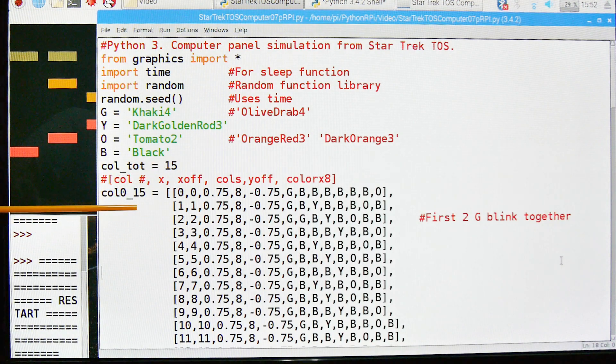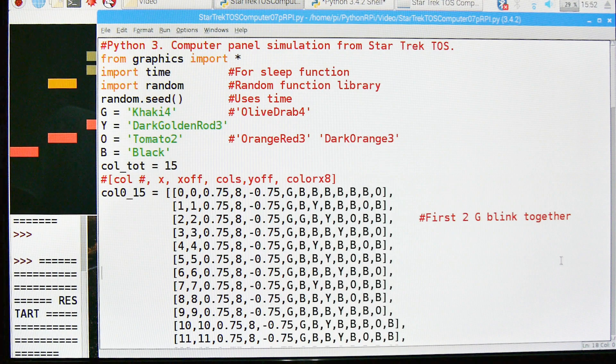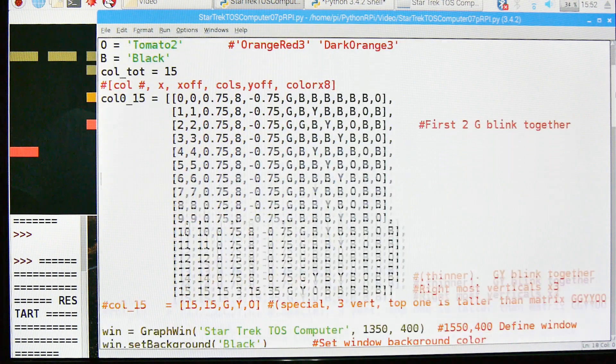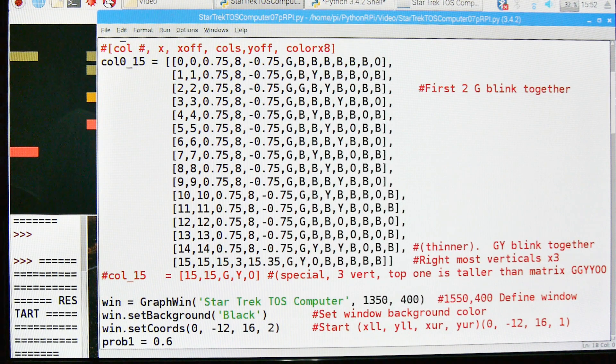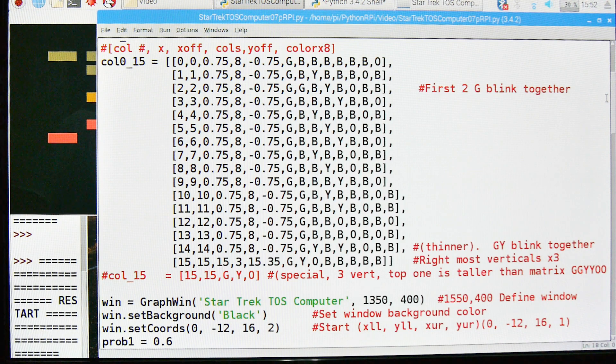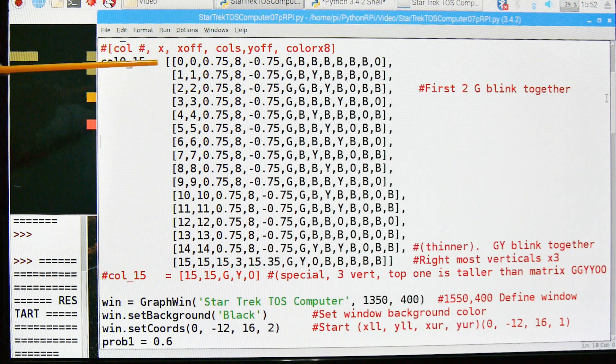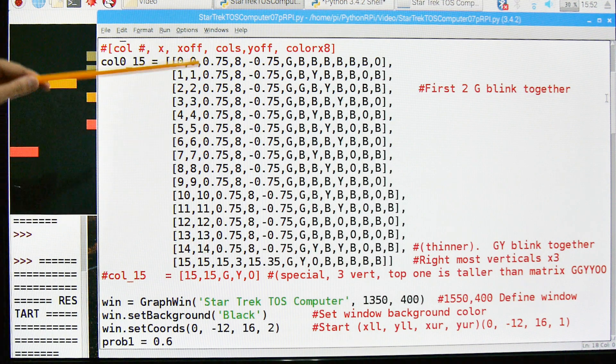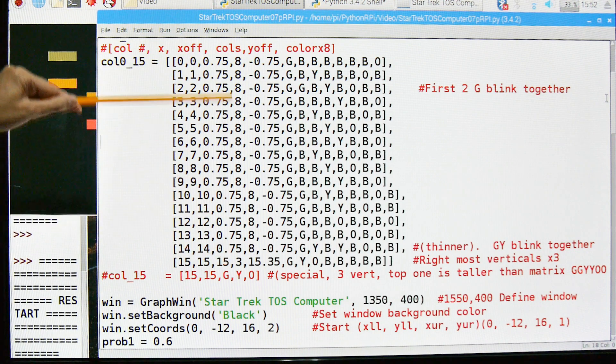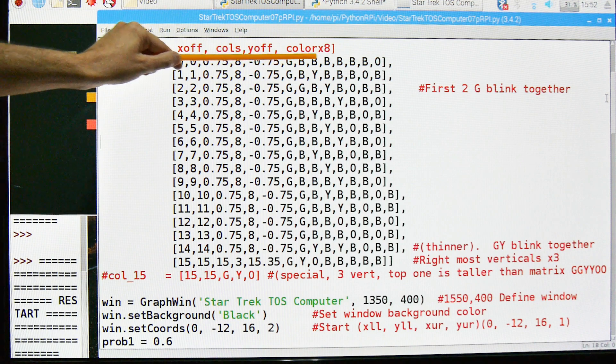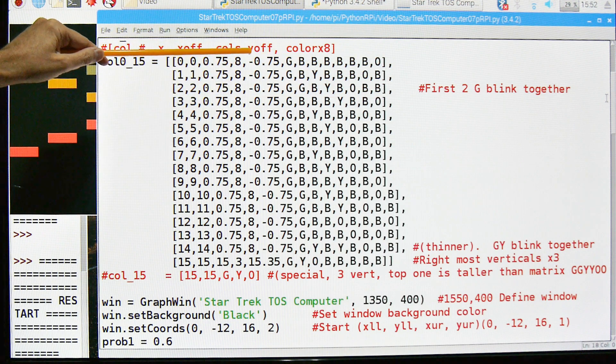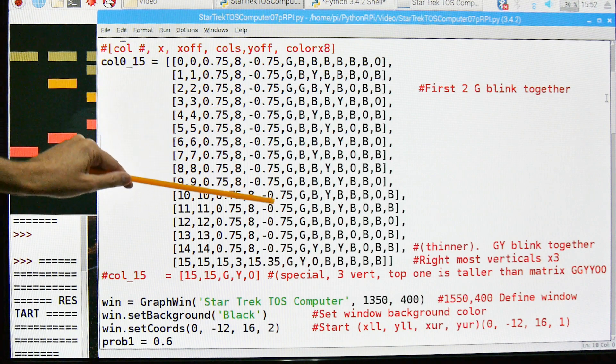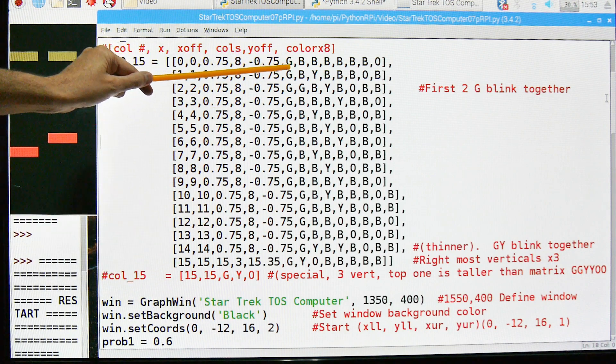In fact, there's 16, but I'll show you why. Actually, let's just look at it right now. Column 16 are those three strange vertical bars over there. And yeah, they don't fit the rest of the pattern. But again, this is the way it was on the original. So there's 15, then there's plus 1, and this is the name of the variable. This is the list where I stored all the color information.